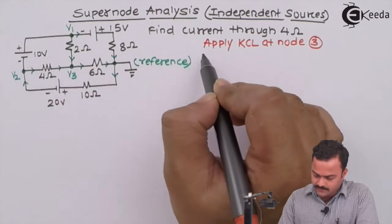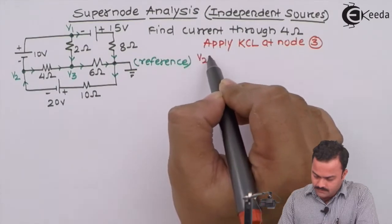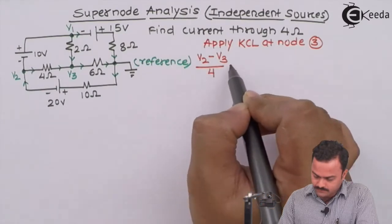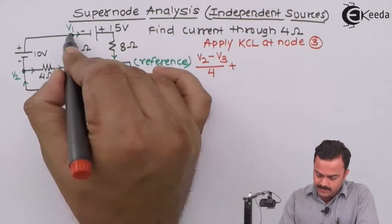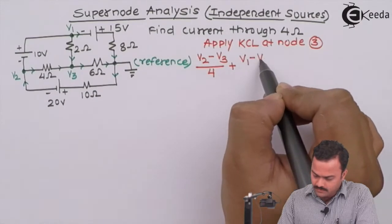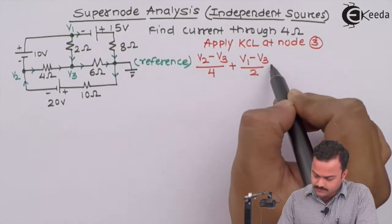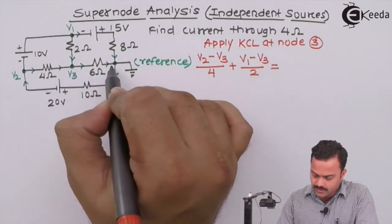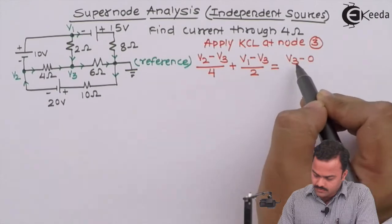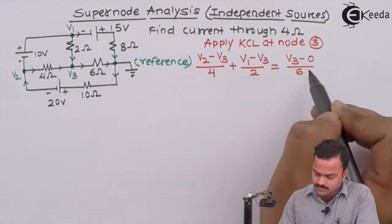4 ohm, which is nothing but V2 minus V3 upon 4. One more incoming current is this: started at V1, ending on V3, resistance is 2 ohm. And the only outgoing branch is this: V3 minus 0 upon 6.